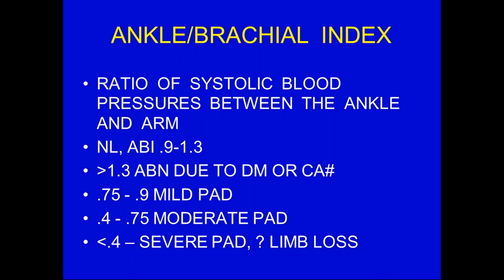The ankle brachial index is a ratio of the systolic blood pressure between the ankle and the brachial artery. Normal is between 0.9 and 1.3, meaning that the ankle pressures are typically a little bit higher than the brachial arteries. Over 1.3 is typically a bad sign — there can be calcification so that the vessels are not pulsatile; this is often secondary to diabetes. Between 0.75 and 0.9 is considered mild peripheral arterial disease, and often there may be only one focal area. Between 0.4 and 0.75 is considered moderate disease, which can be one severe stenosis or two or more stenoses. With an ABI less than 0.4, this is considered severe disease that can result in limb loss.